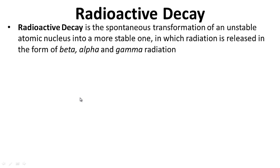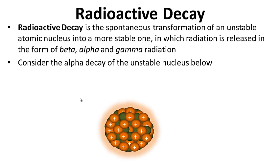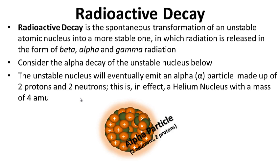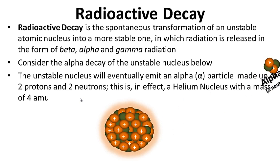Radioactive decay is the spontaneous transformation of an unstable atomic nucleus into a more stable one, in which radiation is released in the form of beta, alpha, and gamma radiation. Consider the alpha decay of the unstable nucleus below — the unstable nucleus will eventually emit an alpha particle made up of two protons and two neutrons, essentially a helium nucleus with a mass of 4 AMU.